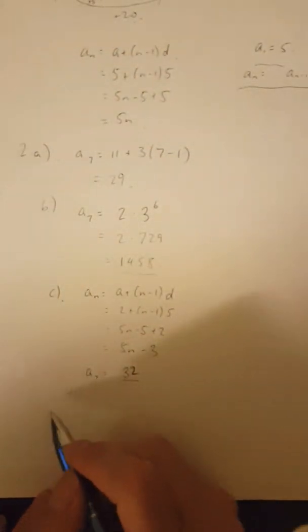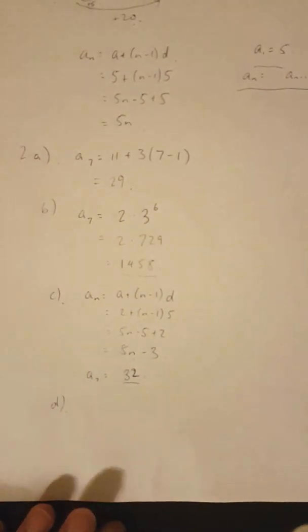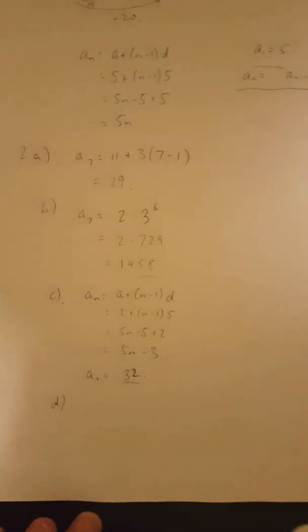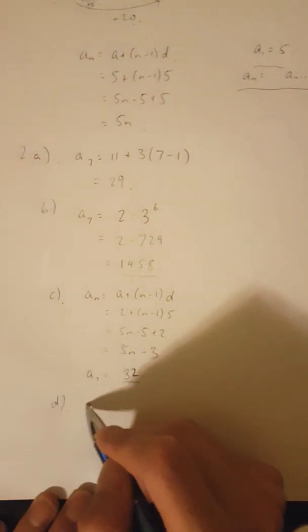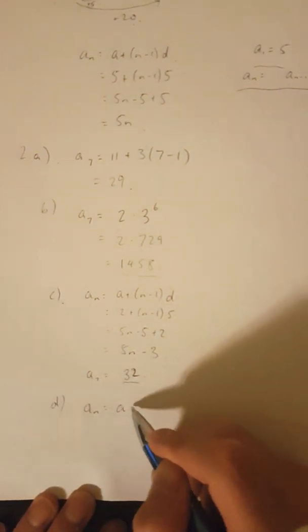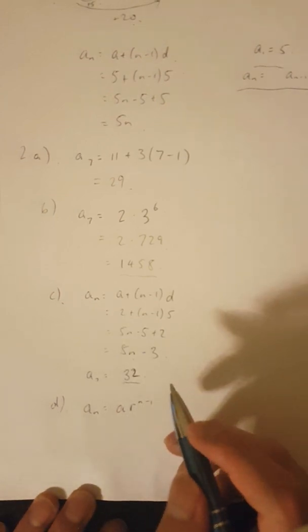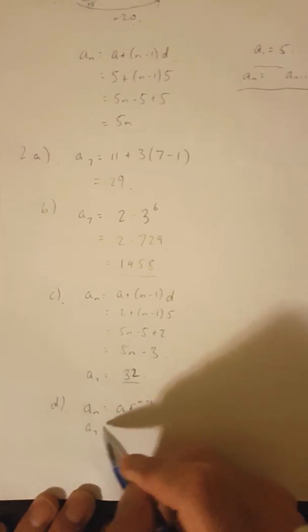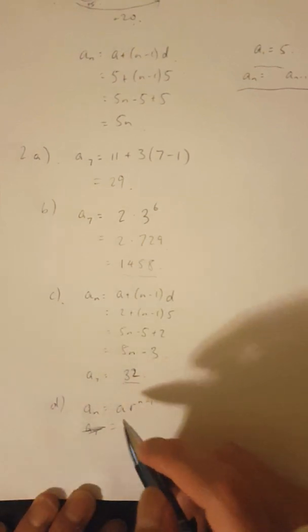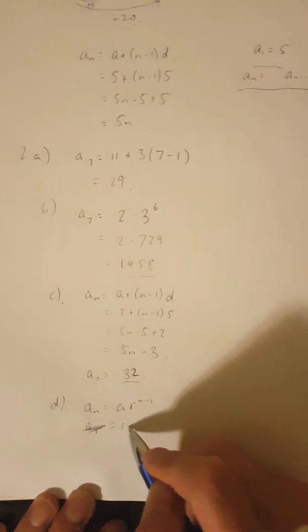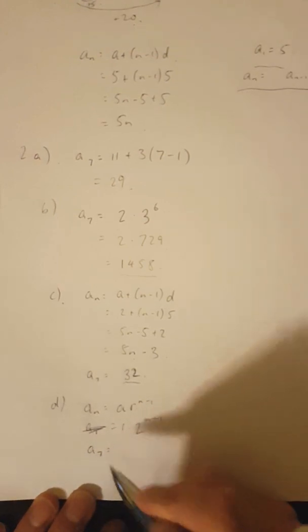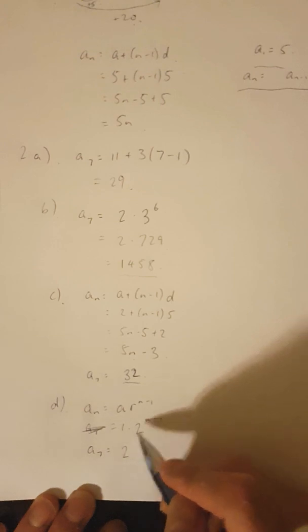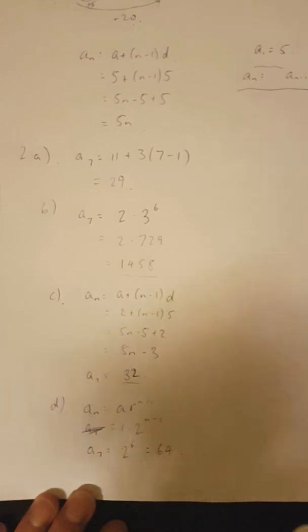Once you know this, it's going to be exactly the same as before — substitute N equals seven and you can see that it's going to be 32. Let's wrap up this video with question D. Question D is similar; it's just a geometric sequence. So A_N equals A times R to the power of N minus one. The first term is one and the ratio is two, so A_7 is simply two to the power of six, which equals 64.